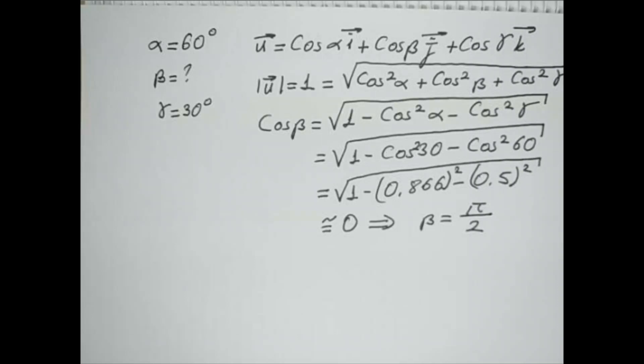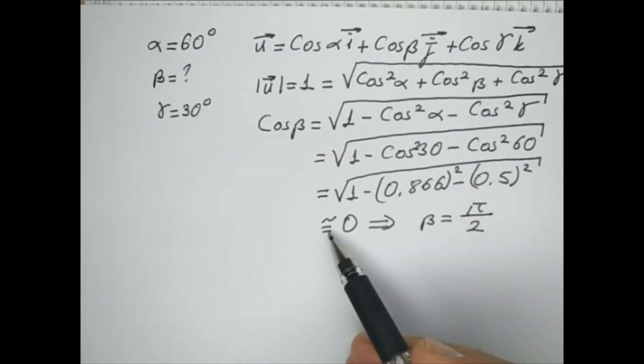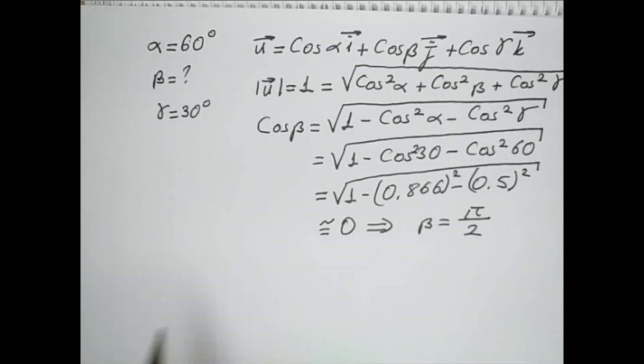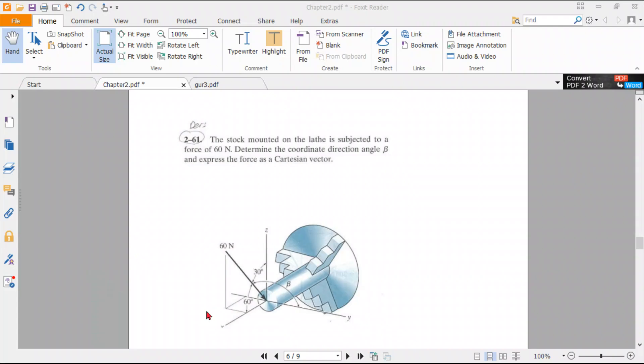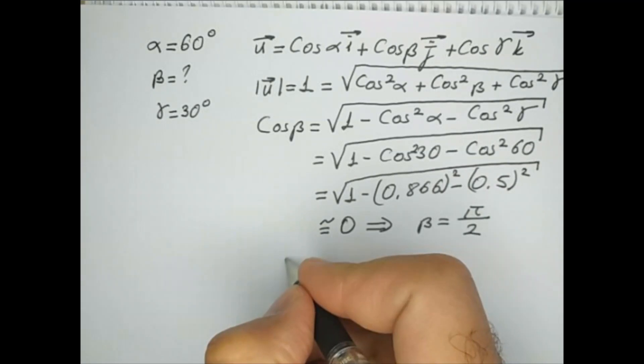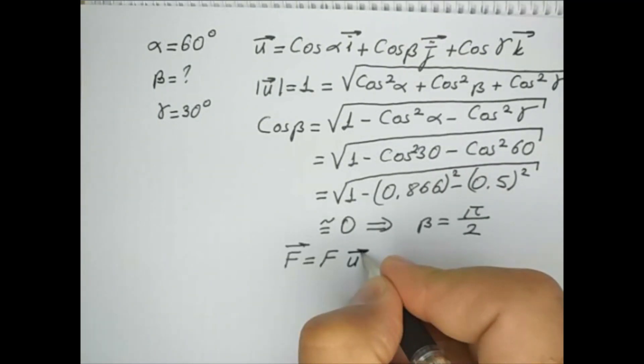Now certainly I can write the force acting on it. So the force, the Cartesian F in Cartesian coordinates, F multiplied by U. And as you remember, the magnitude of the force is 60, as it is seen on the screen. 60 multiplied by